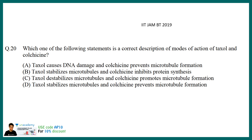Question number 4 is from IIT JAM 2019, asking for the correct description of modes of action of Taxol and Colchicine. It's a pattern that they definitely ask questions from drugs that inhibit the cell cycle or interfere with actin or microtubule dynamics. In short, Taxol stabilizes microtubules, whereas Colchicine prevents the polymerization of microtubules. Overall, both of them hinder the cell cycle.